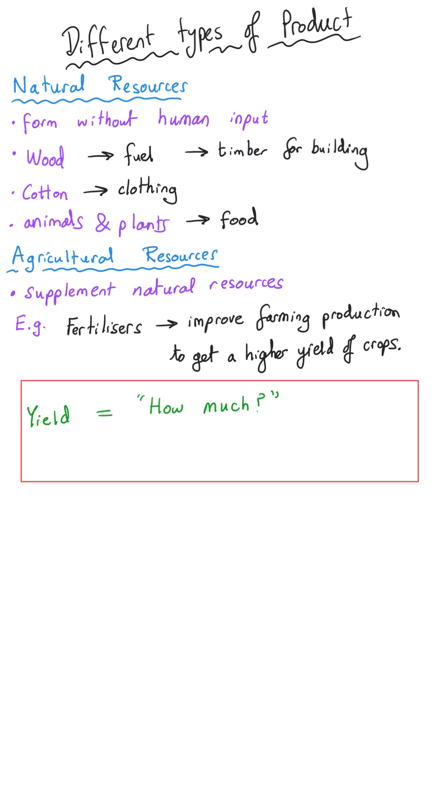When we talk about the yield of something we mean how much of that thing that we've got and so if we're talking about a higher yield of crops that means that we're able to grow more things in our field and produce more food at the end of it.